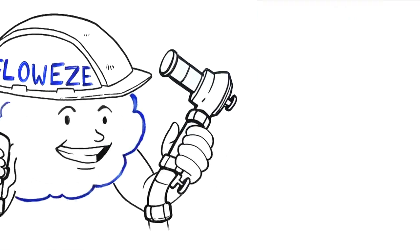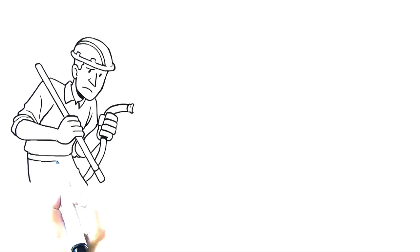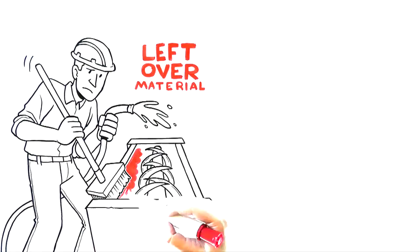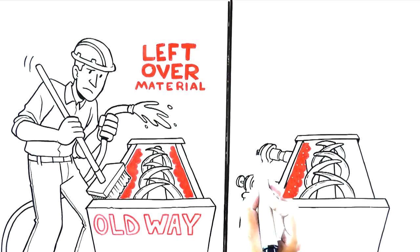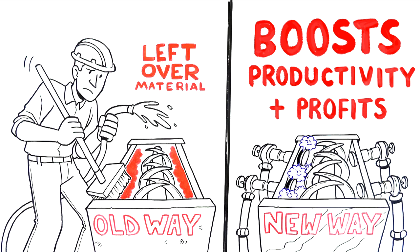It's a simple solution with amazing results thanks to me, FlowEase. I can help in lots of places. The AirSweep system can clean out ribbon blenders and mixers between batches, saving time, material, and water, while boosting productivity and profits.